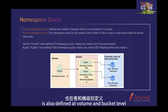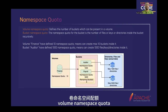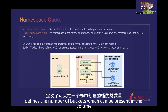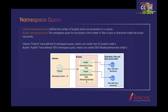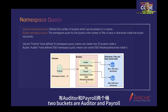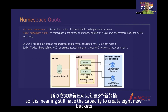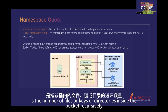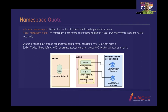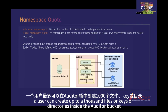Similarly, namespace quota is also defined at volume and bucket level. Volume namespace quota defines the number of buckets that can exist in the volume. For example, a finance volume defined with a namespace quota of 10 currently has two buckets — auditor and payroll — leaving capacity for eight more. Bucket namespace quota is the number of files, keys, or directories inside the bucket recursively. For example, an auditor bucket defined with a namespace quota of 1000 allows users to create up to 1000 files, keys, or directories inside it.